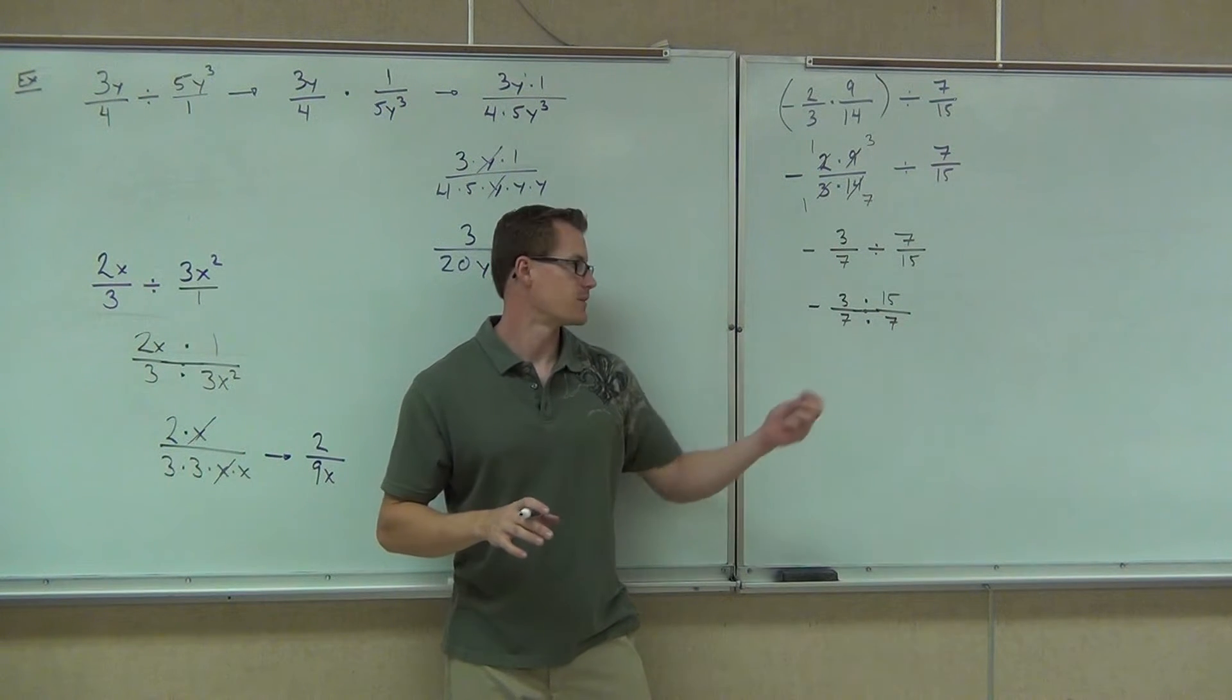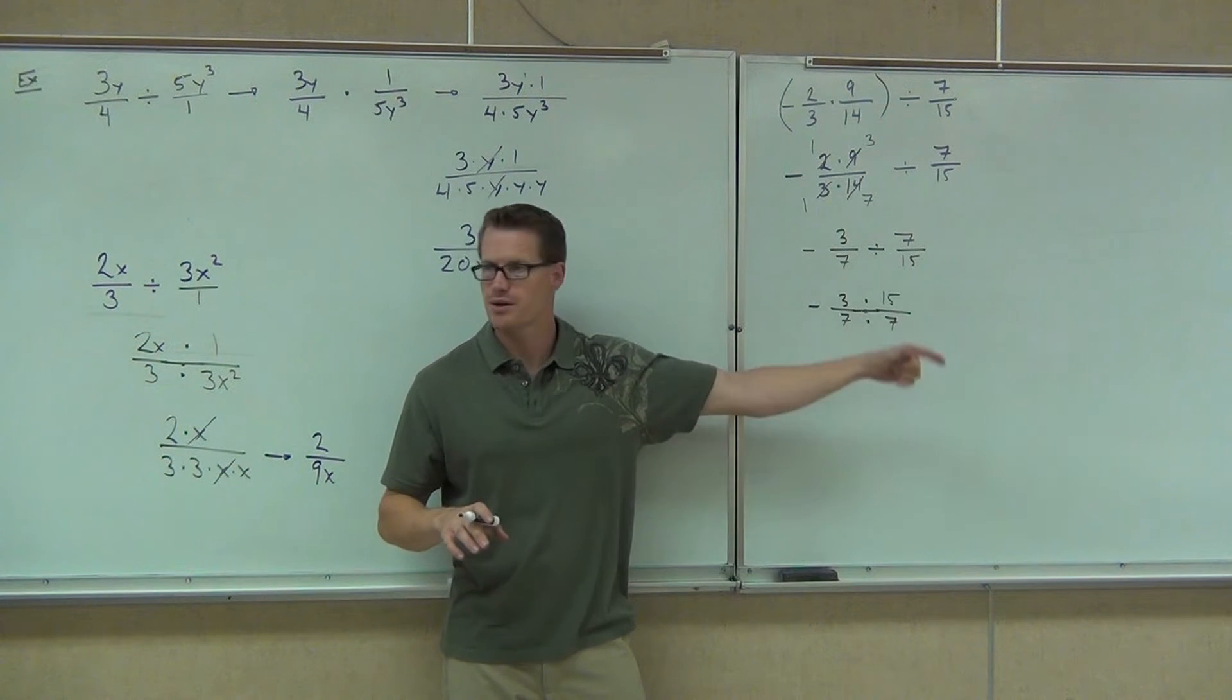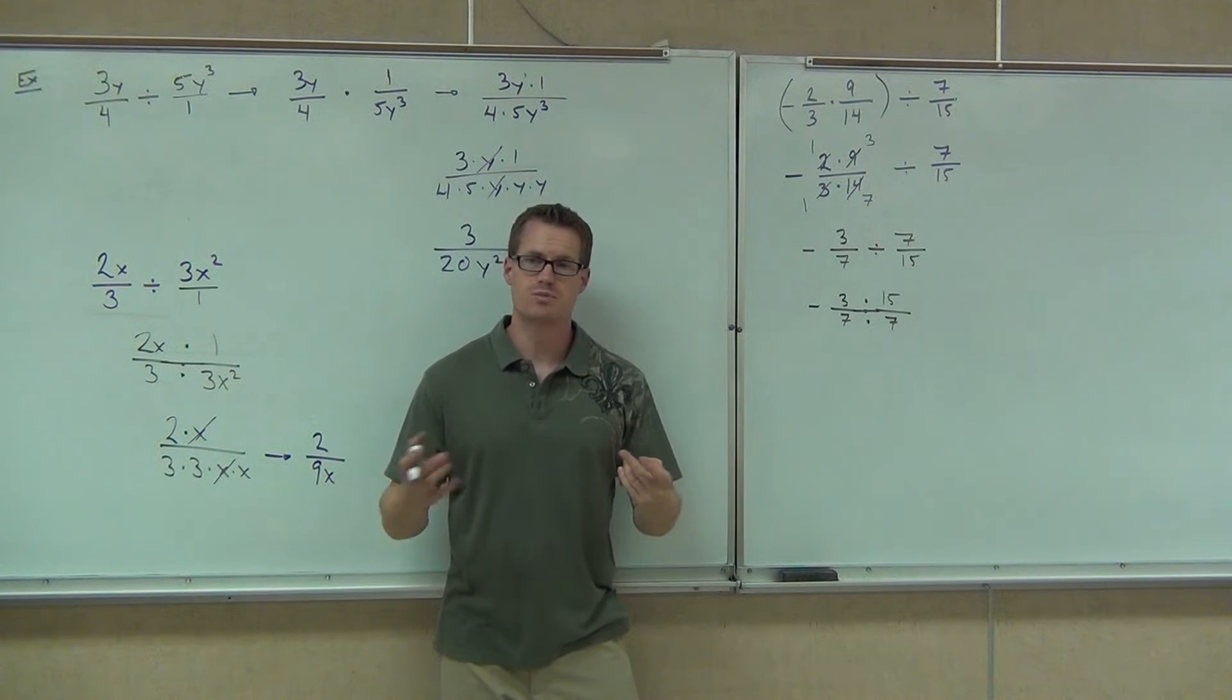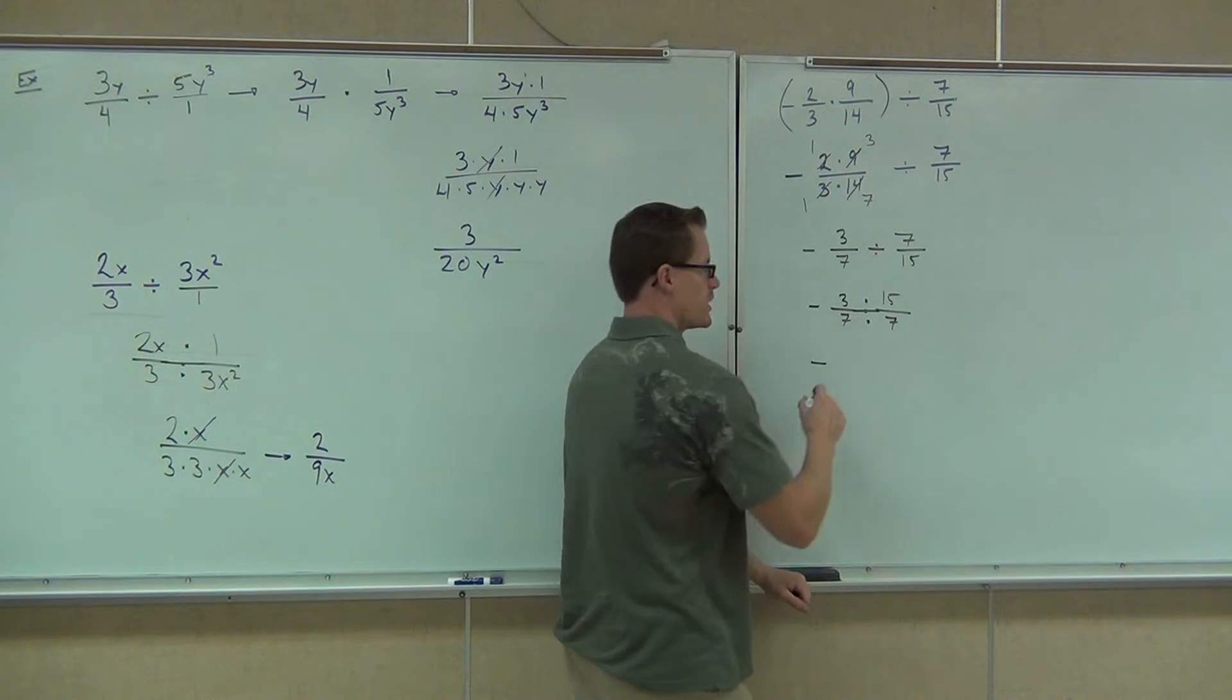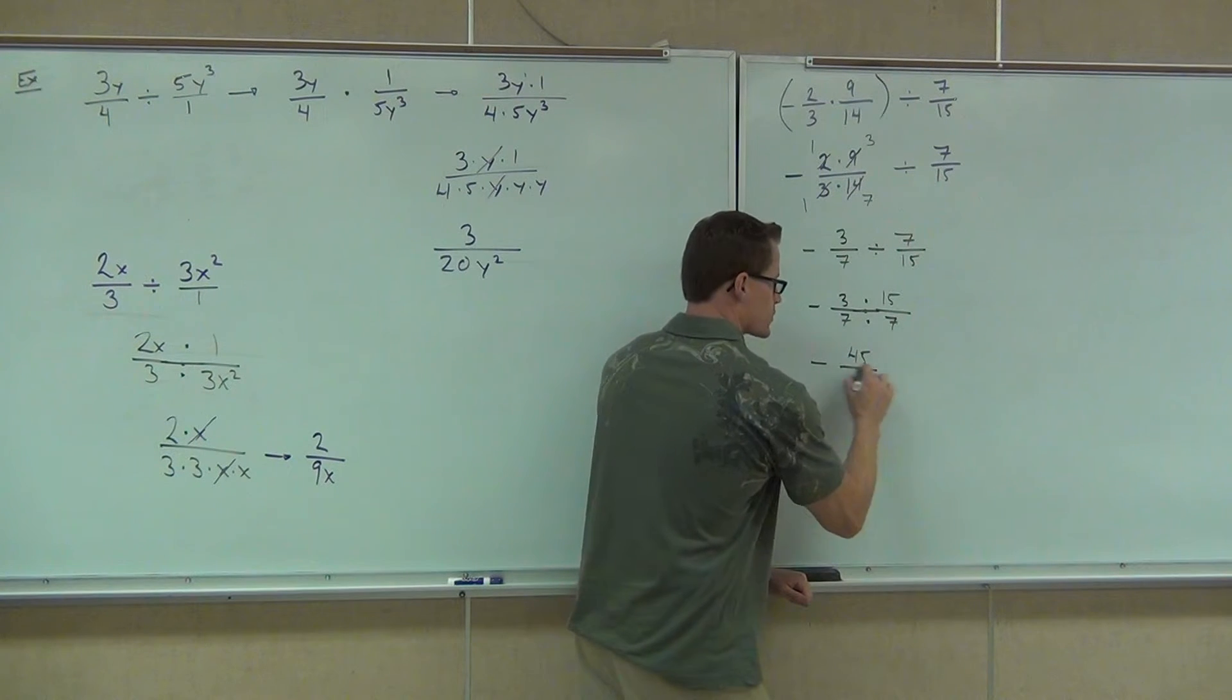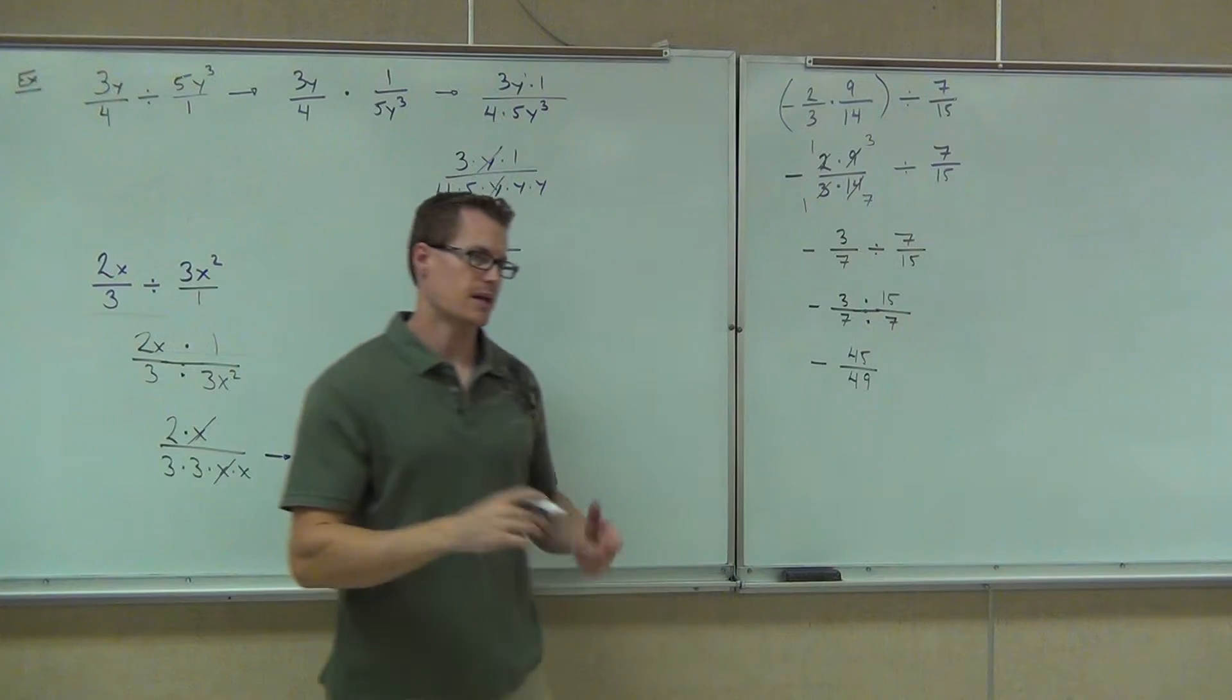No. No. The 3 and 15ths are on the numerators now. We can't cross that stuff out. 7 and 7 on the denominators. We can't cross that stuff out. All we're left with is multiply what's left over. I know we're going to get a negative. Our numerator is going to be 45. Our denominator is going to be 45. That's as good as you can do it. You can't simplify that anymore.